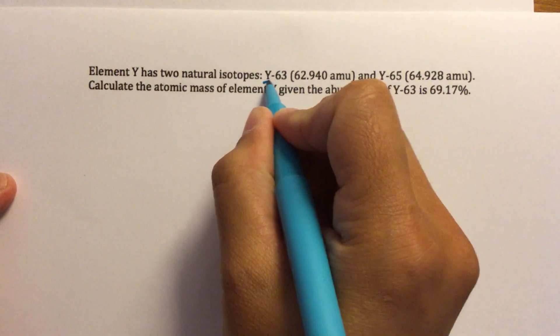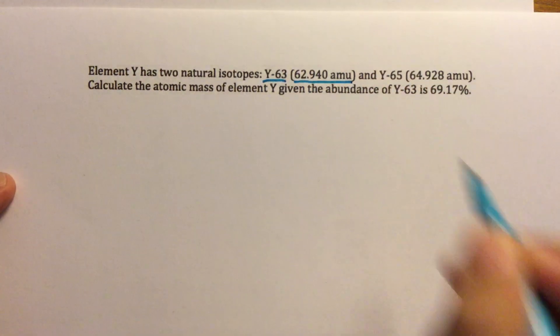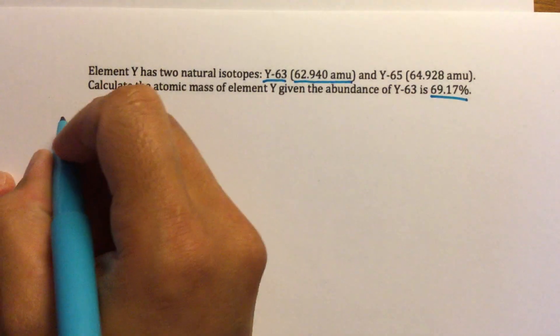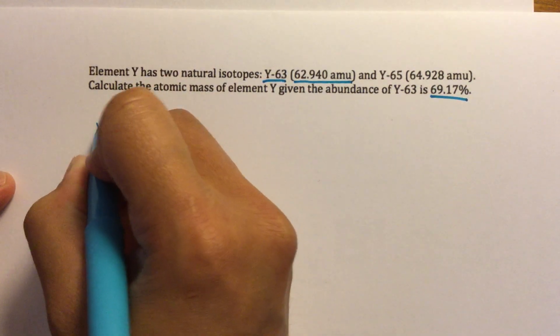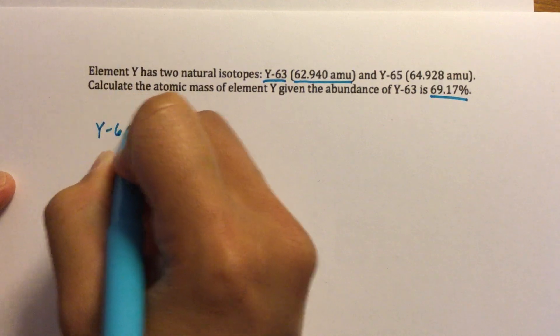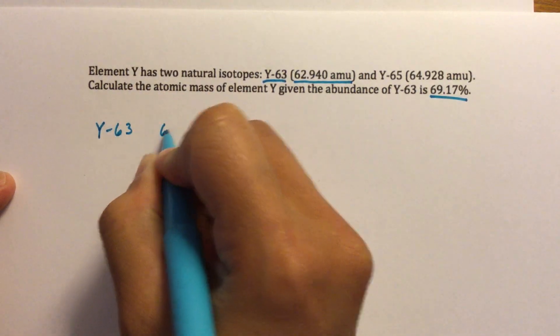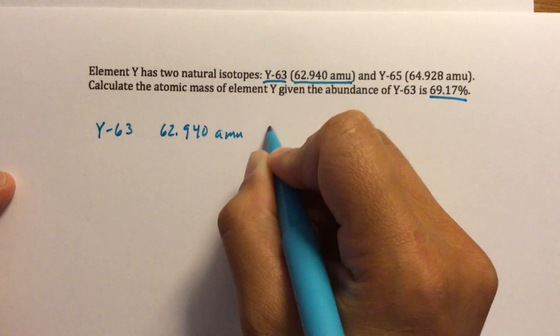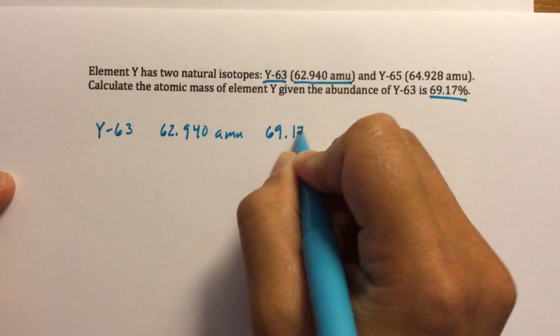So we have Y-63, here's its mass, and actually it also says Y-63 with its abundance. So I'm going to put Y-63 has a mass of 62.940 amu, and it's 69.17%.